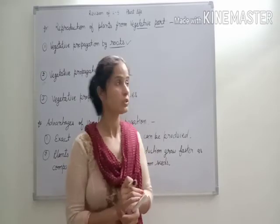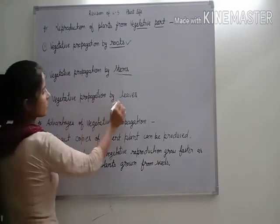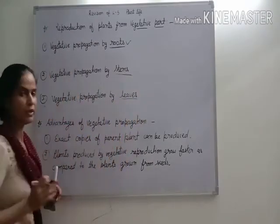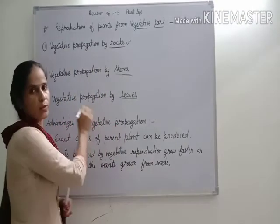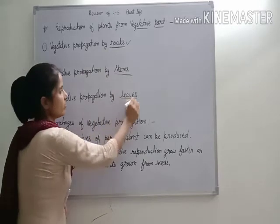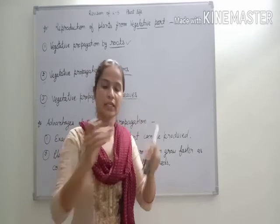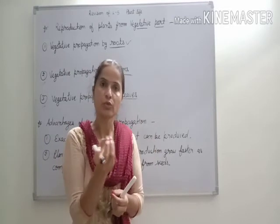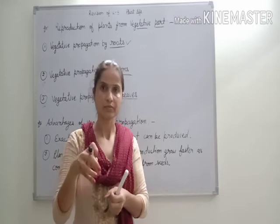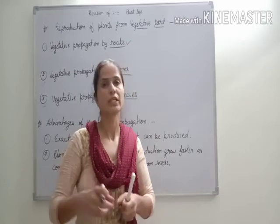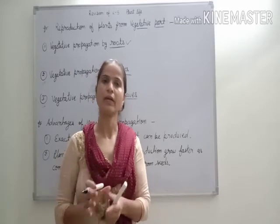Next is vegetative propagation by leaves — leaves ke through new plant produce hota hai, which is called vegetative propagation by leaves. The edges or corners of the leaves grow, and when the leaves grow from the ground, then it becomes a new plant — a new plant is produced.